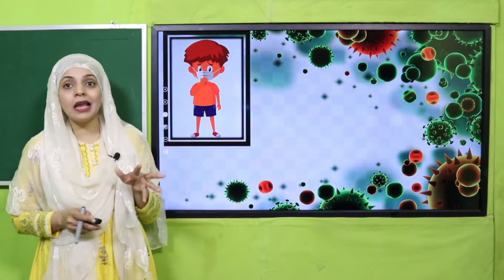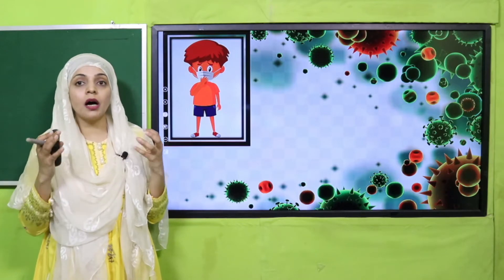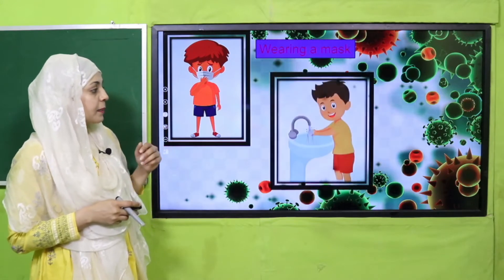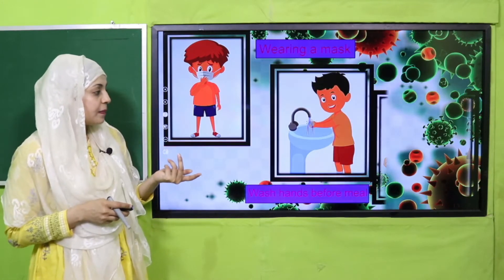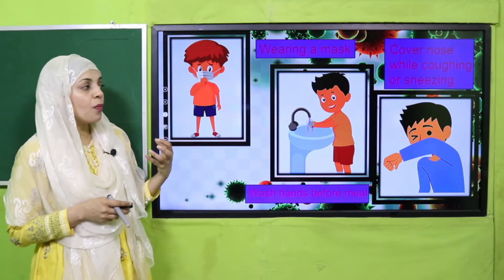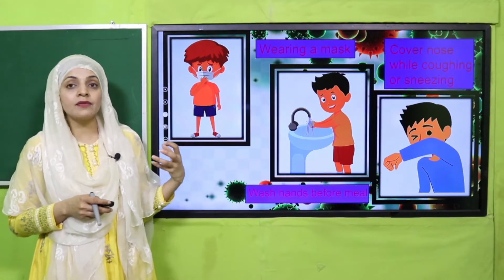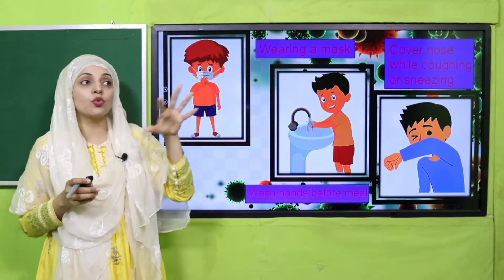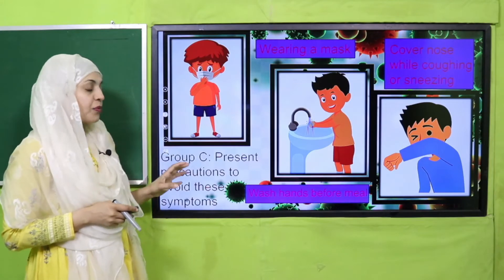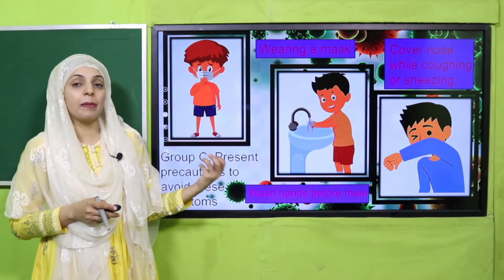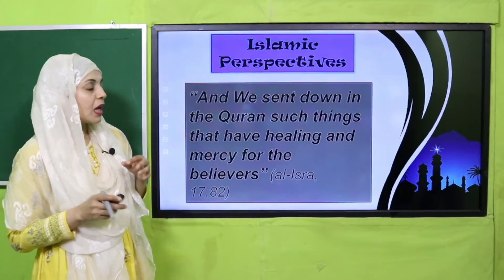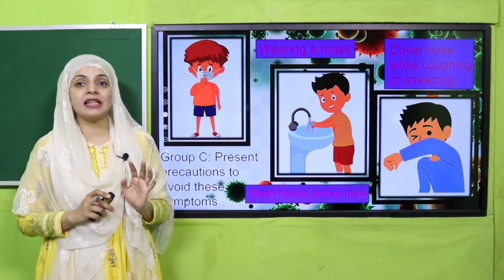Then the third group will tell how we can prevent illnesses — by wearing a mask, by washing our hands, and by covering our mouth when we are sneezing. This is how we can prevent the spread of germs and keep ourselves and others safe. So group three's task is to explain how others can stay protected from these illnesses. My dear students, pause the video and complete this activity.